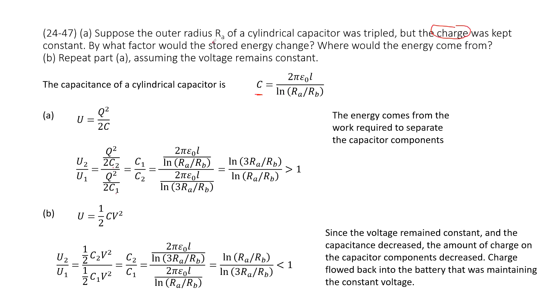As we said, c1 has outer radius Ra. For c2, the outer radius becomes 3 times Ra. Simplifying it, we get the ratio of u2 over u1.